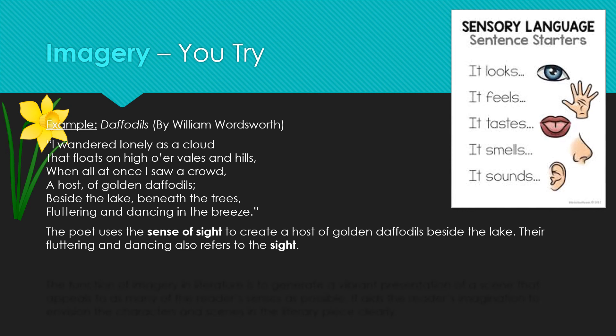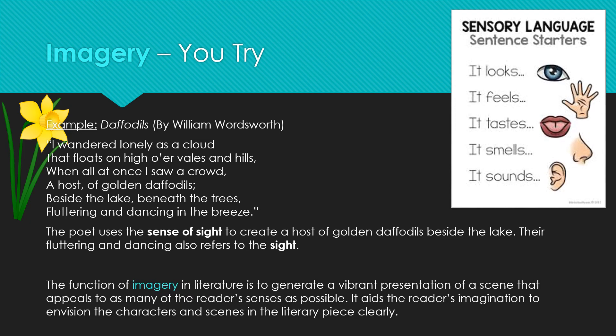So what do you think is the function of imagery? Why do writers use imagery in their texts? The function of imagery in literature is to generate a vibrant presentation of a scene that appeals to as many of the reader's senses as possible. It aids and helps the reader's imagination to envision and imagine the characters and scenes in the literary piece clearly.